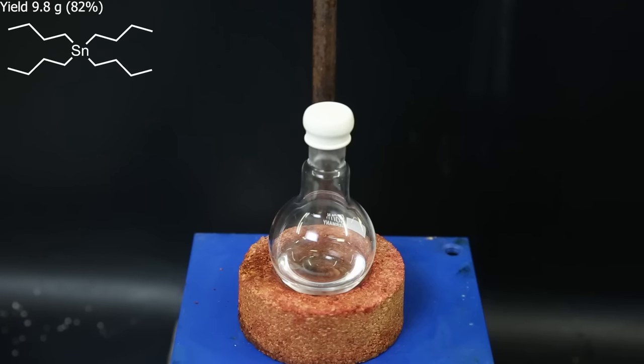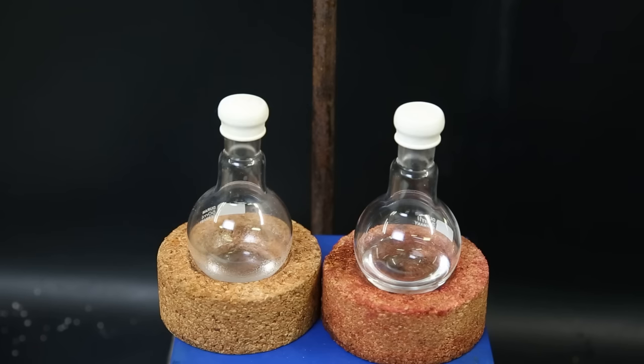Now I can move on with the next step, which is a comproportionation reaction. So what I want is tributyl tin chloride, but I have tetrabutyl tin. So to make tributyl tin chloride, I can use the tin chloride that is set aside at the beginning.